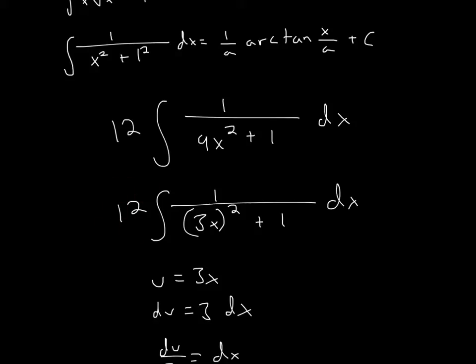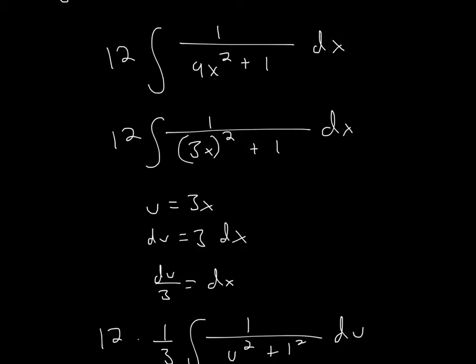Remember to keep the 12. Now we need it to be exactly like this so we can use this formula. I can say that u equals 3x. If u equals 3x, we have du which is 3dx. Is there a 3 in this problem? There's a 12 but not a 3. So we can divide both sides by 3 and have du divided by 3.